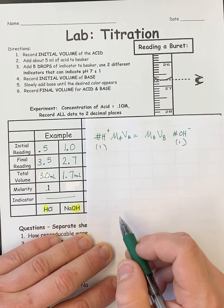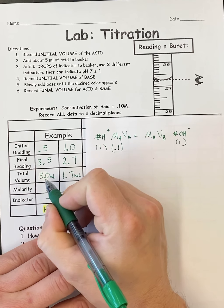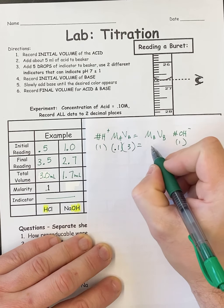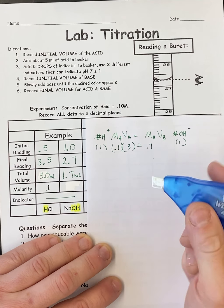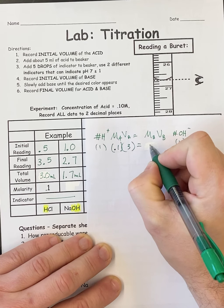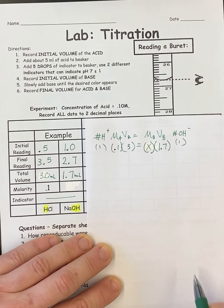So here's what I know. I know the concentration of my molarity is 0.1. I know the amount of acid I used was 3 milliliters. I know the concentration of my base was unknown. So the concentration of my base is X. And the volume of my base was 1.7. So now I'm just going to multiply these together and solve for X.